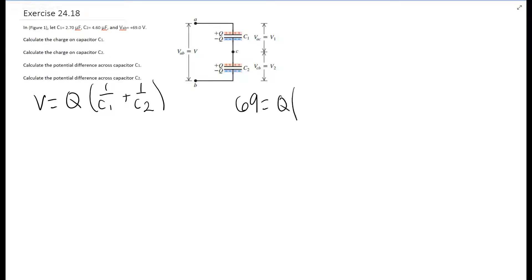So 69 equals Q times (1 over 2.7 times 10 to the negative 6 plus 1 over 4.6 times 10 to the negative 6). Go ahead and simplify that and you get Q equals 1.17 times 10 to the negative 4th Coulombs.